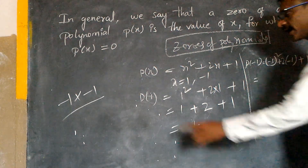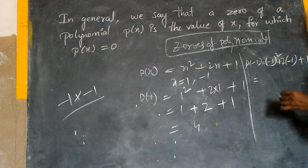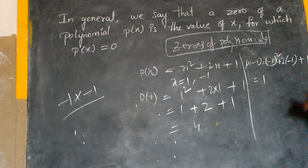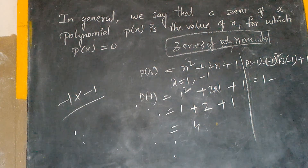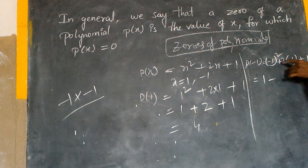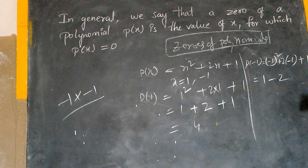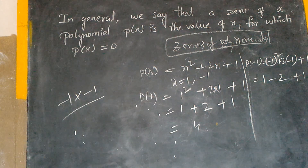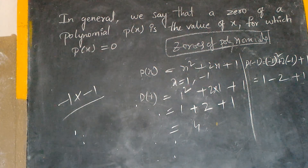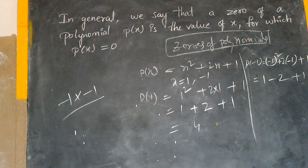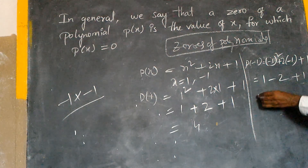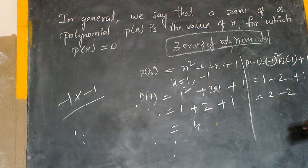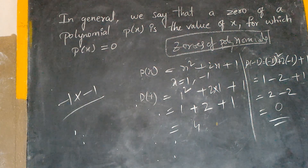Right. Minus into minus? Plus 1. Plus 1 whole square is 1. Plus into minus? Minus 2. 2 whole square is 2. Plus 1. 1 plus 1 is 2. 2 minus 2 equals 0.